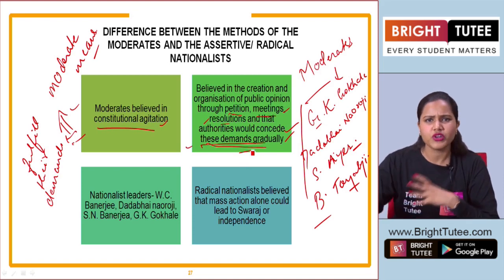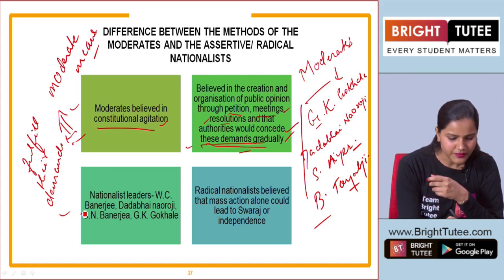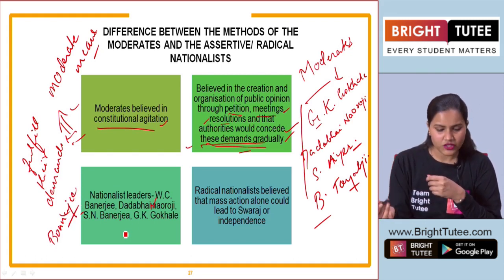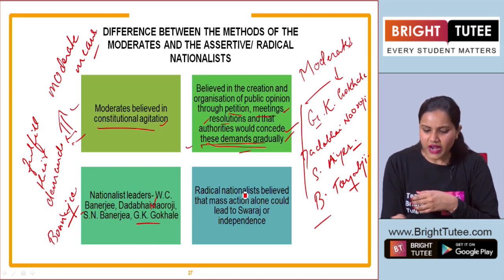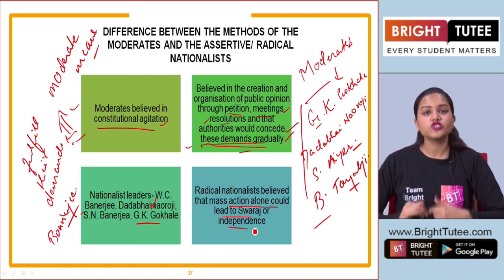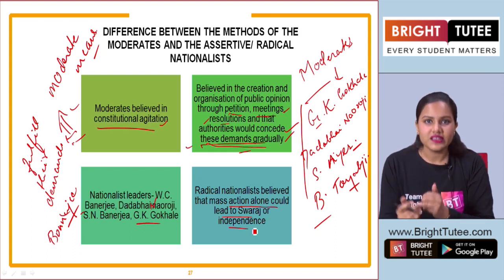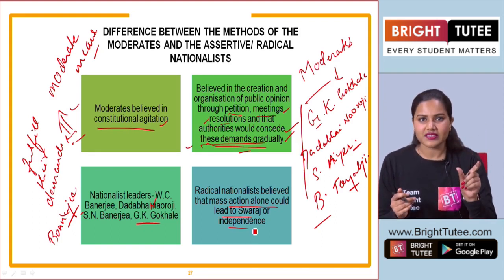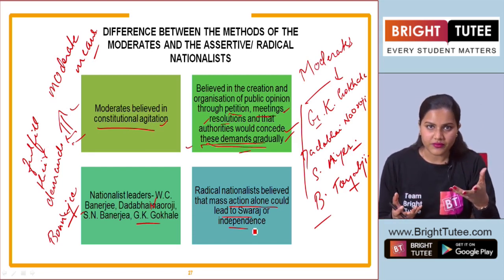Some of the nationalist moderate leaders include W.C. Banerjee, Dadabhai Naoroji, S.K. Banerjee, and Gopal Krishna Gokhale. One important limitation of the moderate leaders was that they were mainly the educated elite class. They did not involve the masses, and they stressed heavily on education.